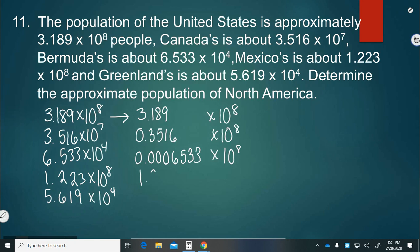10 to the 8th stays. 1.223 times 10 to the 8th. And then we have another 10 to the 4th. So that needs to go back 4 places. 0.0005619 times 10 to the 8th. So now I can add those all up.